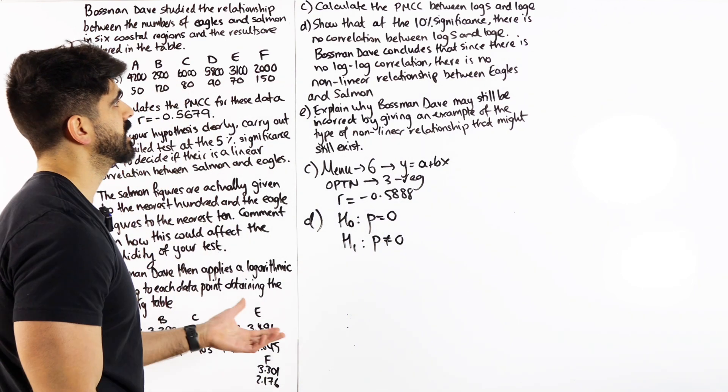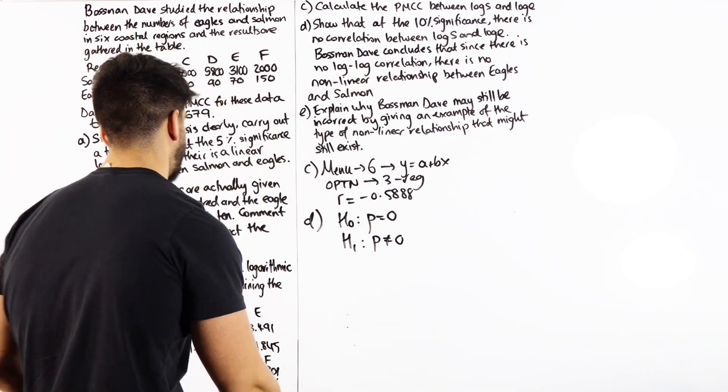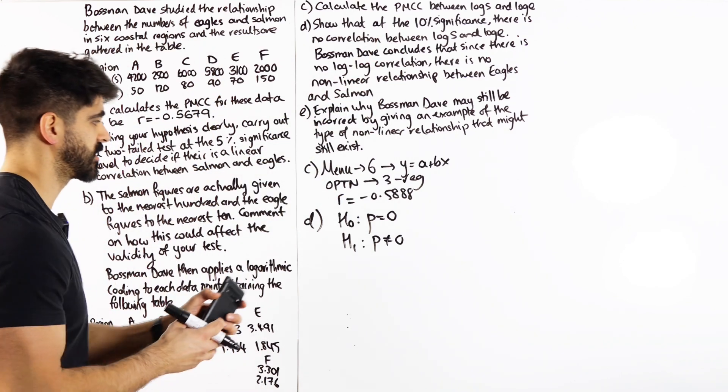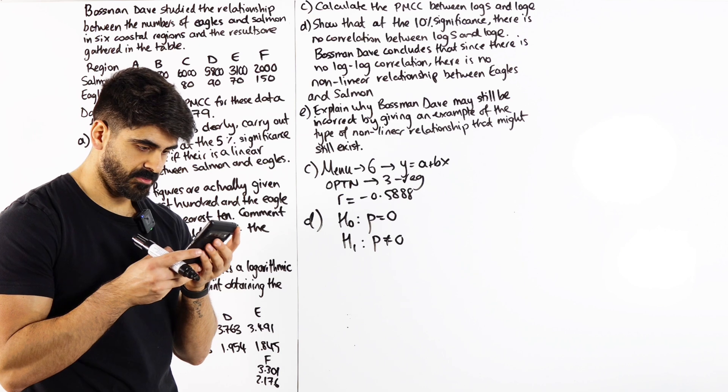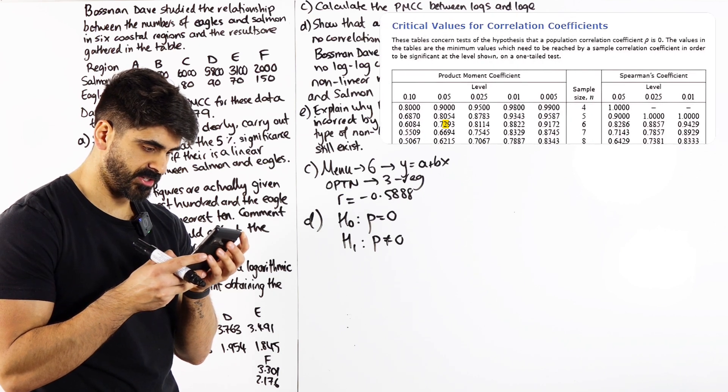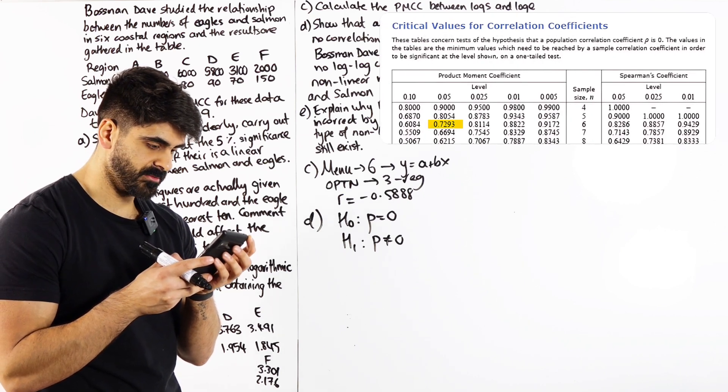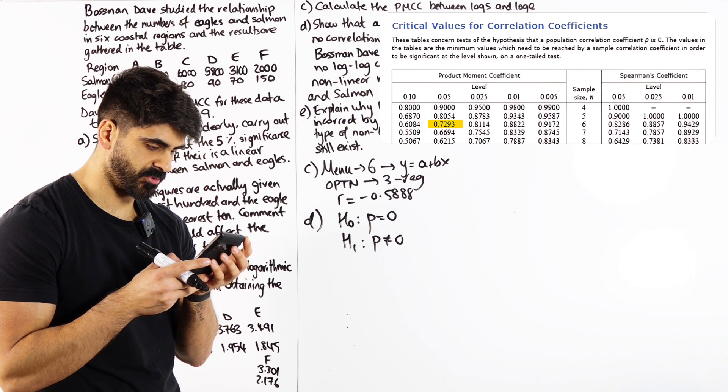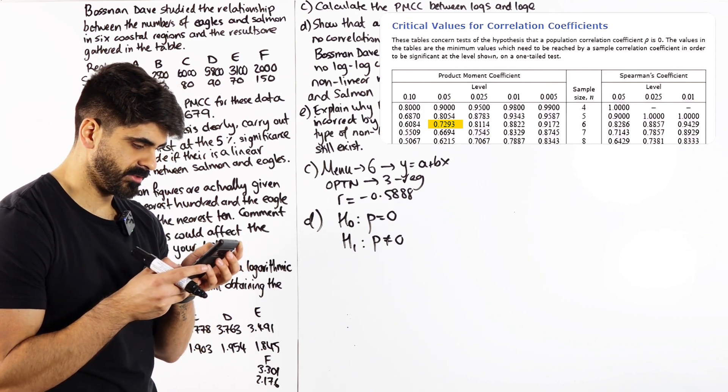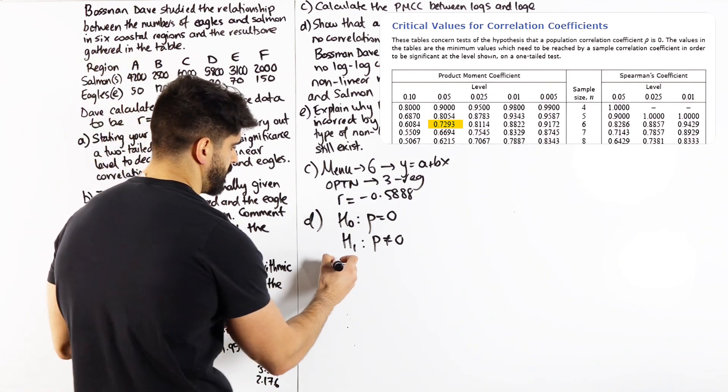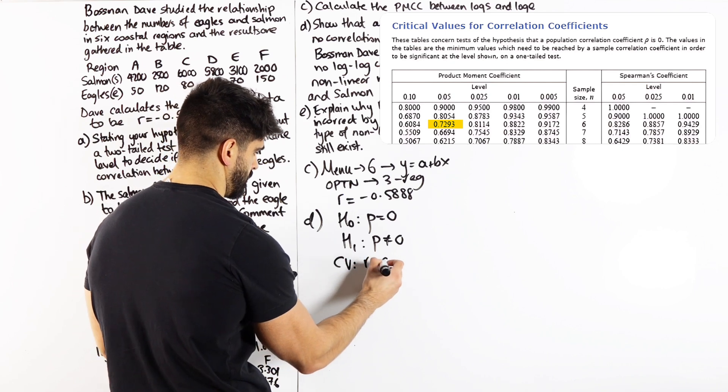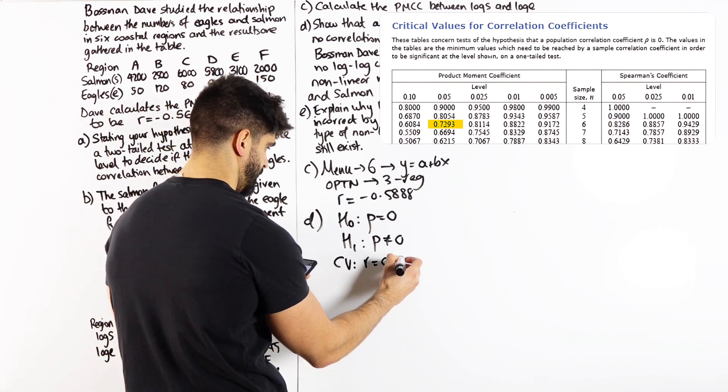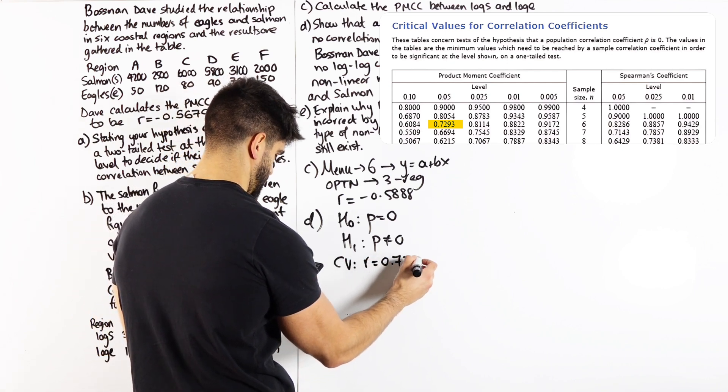Now, it's still 6, but the level of significance has changed, so we're now looking at 5% on each side. So for me, when I look at 5% and 6, I get 0.7293. So my critical value is R equals 0.7293.